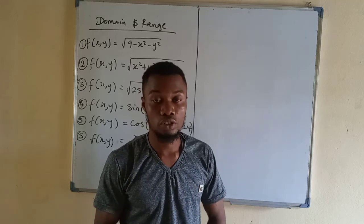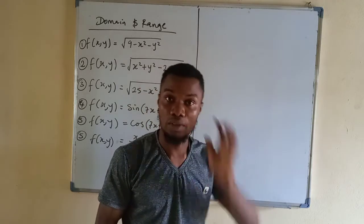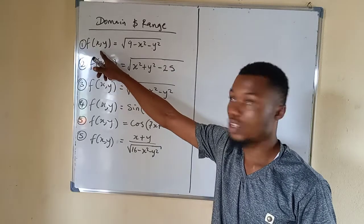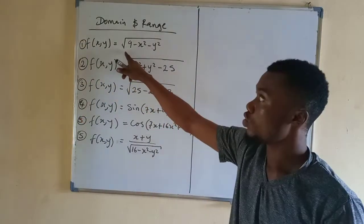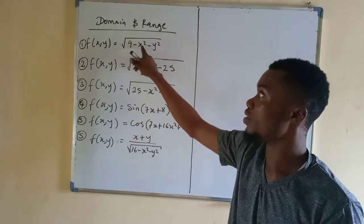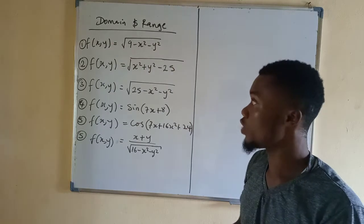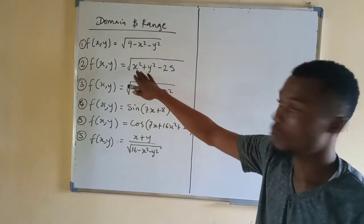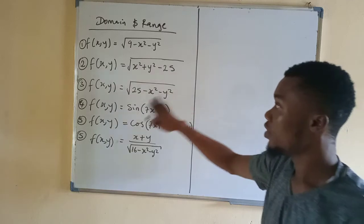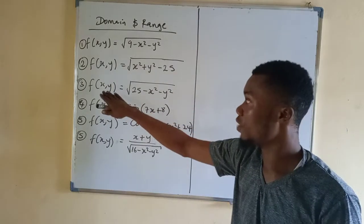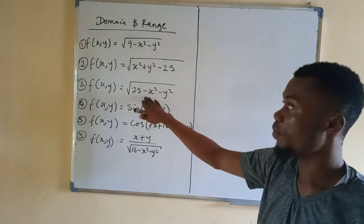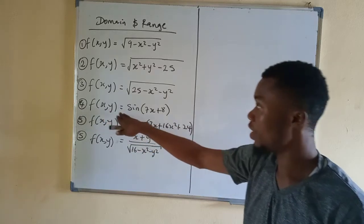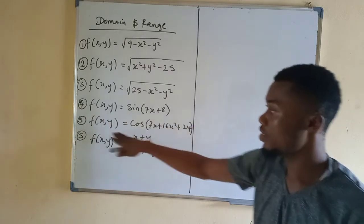I want to look at the domain and range of functions. How do we find the domain and range of functions? So here we have f(x,y) equal to square root of 9 minus x squared minus y squared. Here we have square root of x squared plus y squared minus 25. Here we have f(x,y) equal to square root of 2 minus x squared minus y squared. And here we have f(x) equal to sin(7x plus 8).